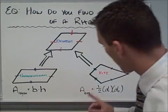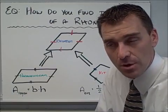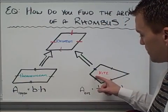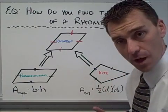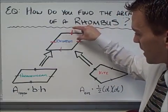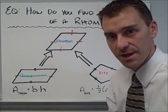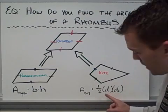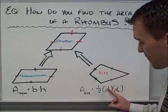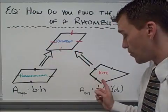Likewise, over here — a kite. A kite, by definition, is nothing more than a quadrilateral with two distinct pairs of consecutive sides congruent. If I take that and morph it into a rhombus, there are two distinct pairs of consecutive sides. So a rhombus is also a kite. One half diagonal one times diagonal two is the formula for the area of a kite, and that formula will also work for a rhombus.